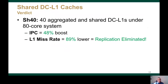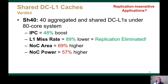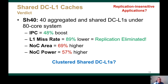Overall, SH40 leads to a significant performance boost and L1 miss rate reduction because of eliminating data replication across DCL1s. However, SH40 incurs high network area and power overheads. Also, some replication-sensitive applications may have affinity towards the private L1 cache organization and may suffer performance loss under the SH40 design. Therefore, we need to address the network overheads and the core performance of some applications.